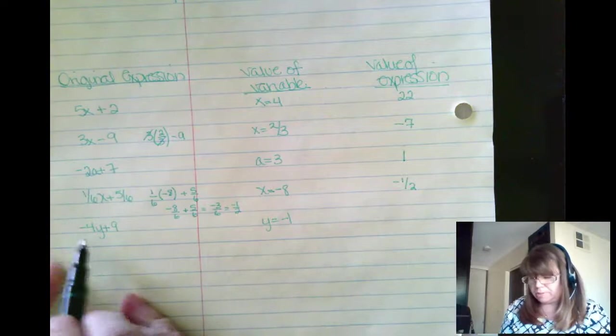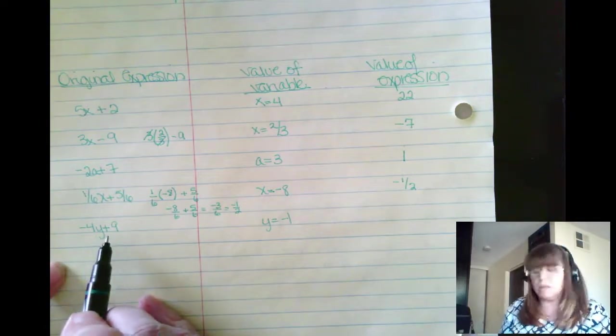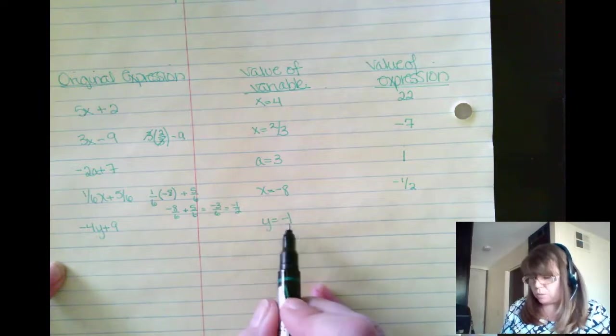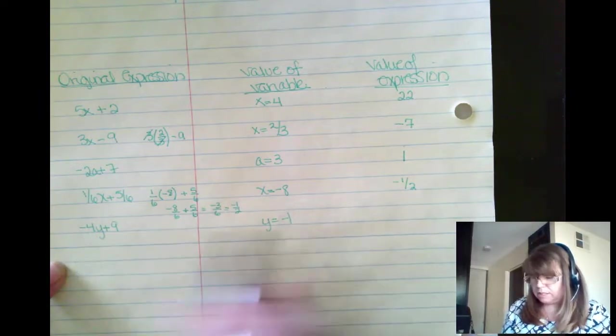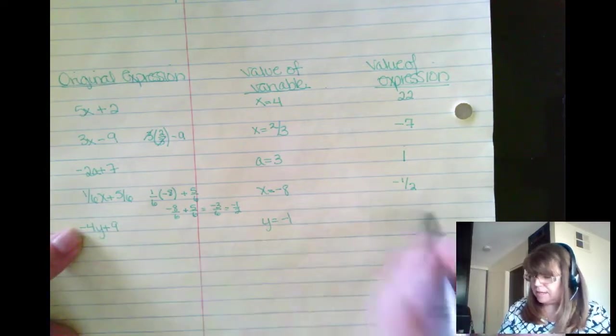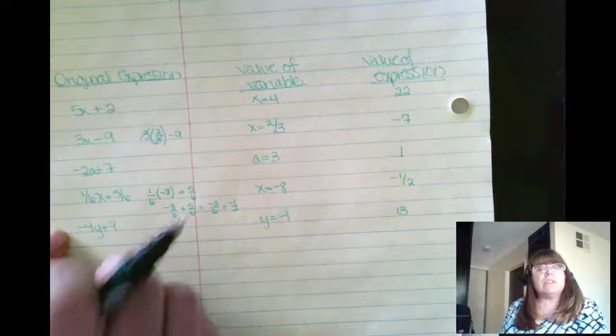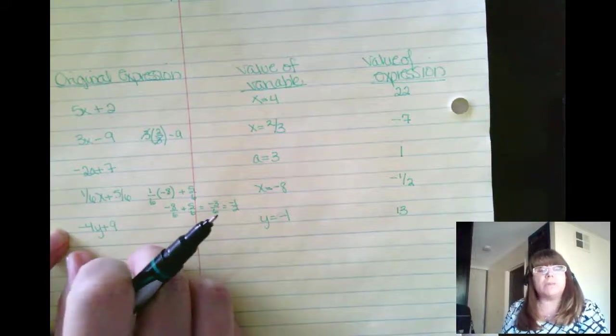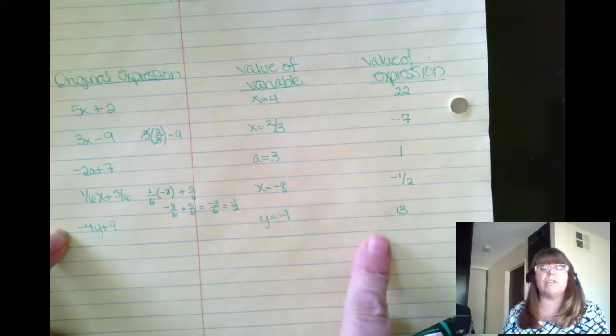Let's try one more. Negative 4y plus 9. What happens when y equals negative 1? Well, negative 4 times negative 1 is positive 4. Plus 9 is 13. So when you're given an expression, an algebraic expression, if you're given the variable value, you can solve for the value of the whole entire expression.